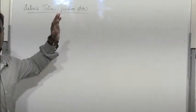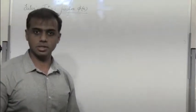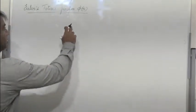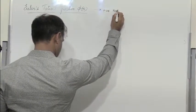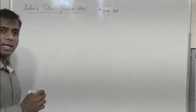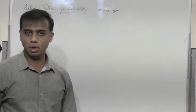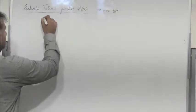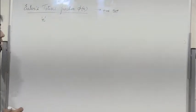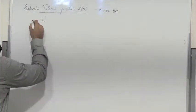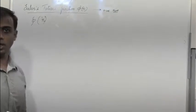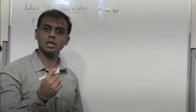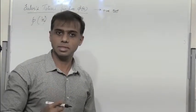Euler's Totient function phi of n, also known as Euler's phi function. Phi of n is the set of positive numbers less than n which are relatively prime to n. So we need to know what relatively prime numbers are.